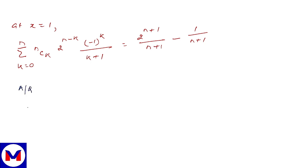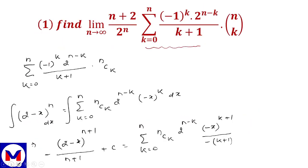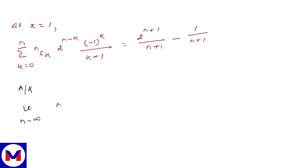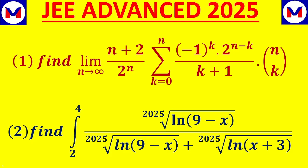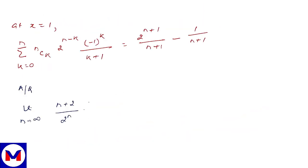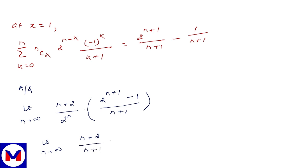Therefore according to the question, limit n tends to infinity, n plus 2 upon 2 to the power n, into 2. In place of this sigma we can write 2 to the power n plus 1 minus 1 upon n plus 1. Or an easy way: we can calculate limit n tends to infinity, n plus 2 upon n plus 1, multiplied by 2 to the power n plus 1 minus 1 divided by 2 to the power n.